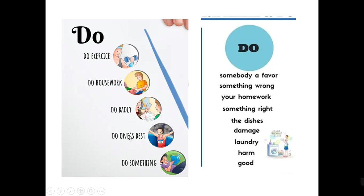You do one's best — that means you do your best to do something. Or you do something — for example, I am here in my house doing something, maybe reading a book or watching a movie. Other examples in the second column: I do somebody a favor, I do something wrong, I do my homework, I do something right, I do the dishes, I will do the dishes means you are going to wash them. I do damage, I do laundry — laundry means to wash your clothes. I do harm, and you do good. That's when we use the verb "do" in simple present in an affirmative sentence.